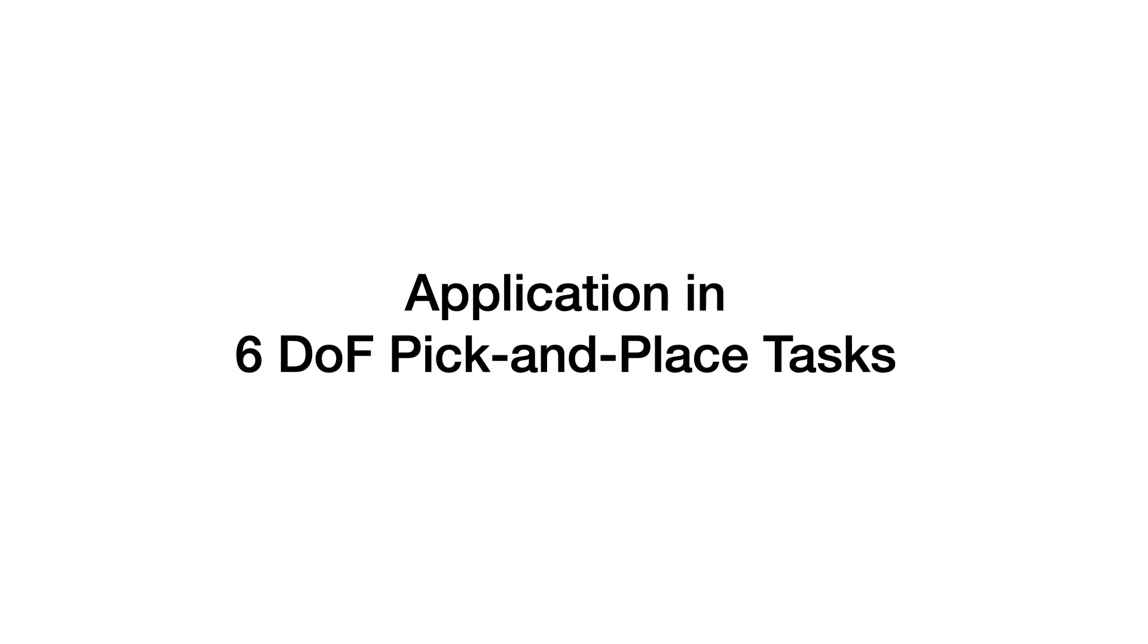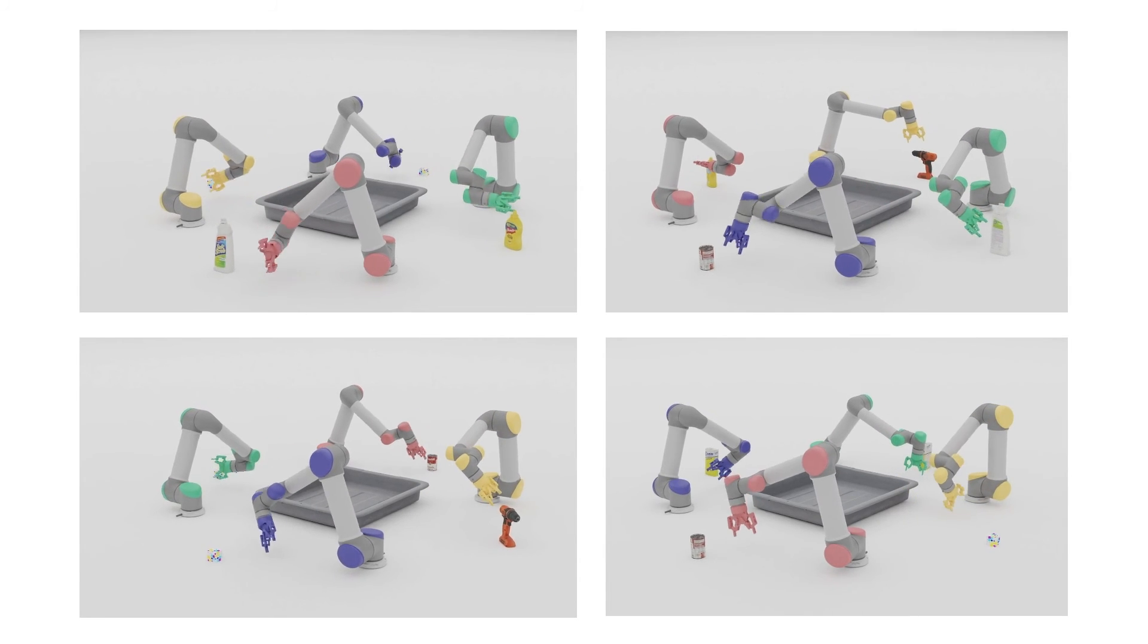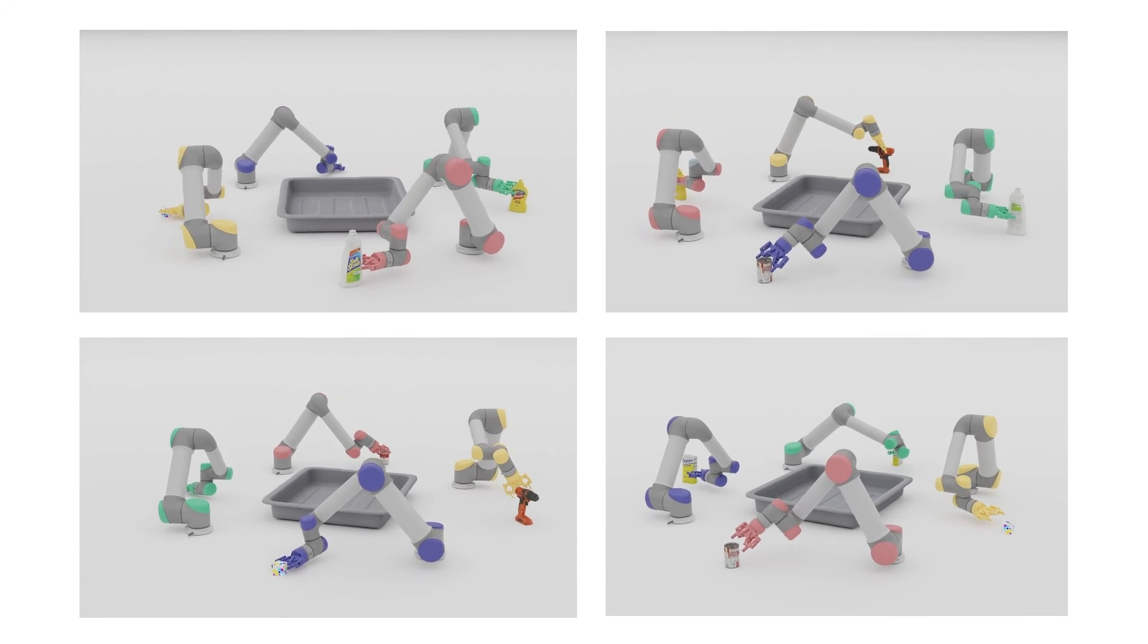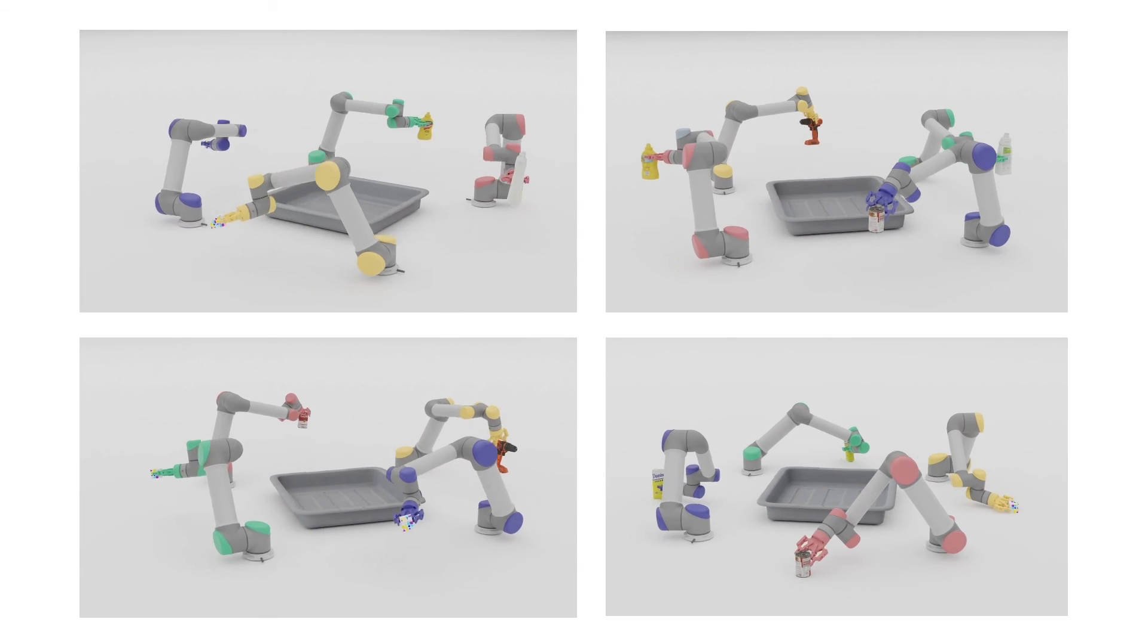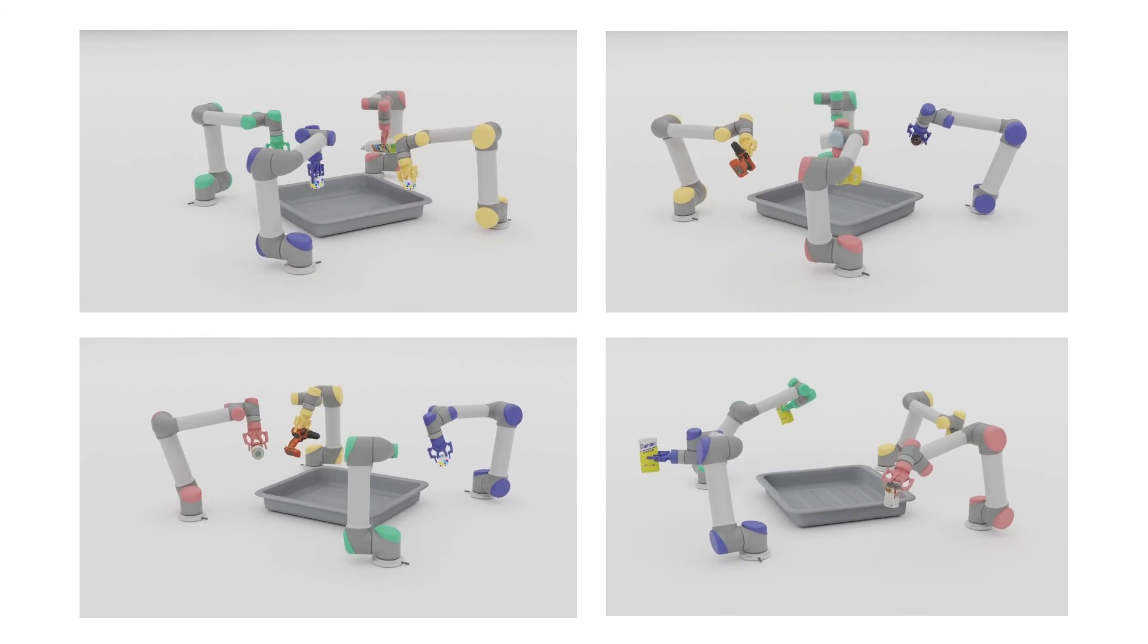Lastly, we show our policy's application in a 6-stuff pick-and-place task. Here, by supplying target poses to its motion planning policy, we can control the arm to reach its pre-grasp pose or pre-dump pose.